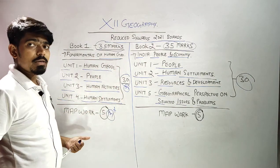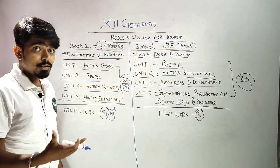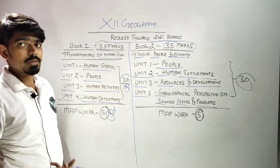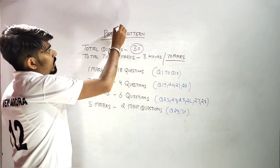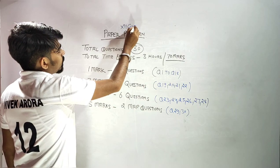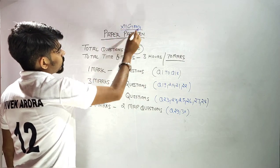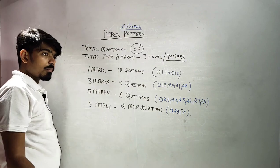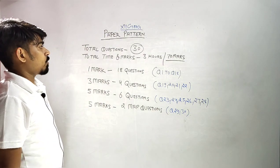अब हमें जानना है कि paper pattern कैसा होगा, यानि कि कौन से question कितने marks के आएंगे और वो कितने आएंगे। 12th Geography paper pattern में — चाहे pre-board हो या board — paper कैसा आएगा। Total 30 questions होंगे पेपर में।